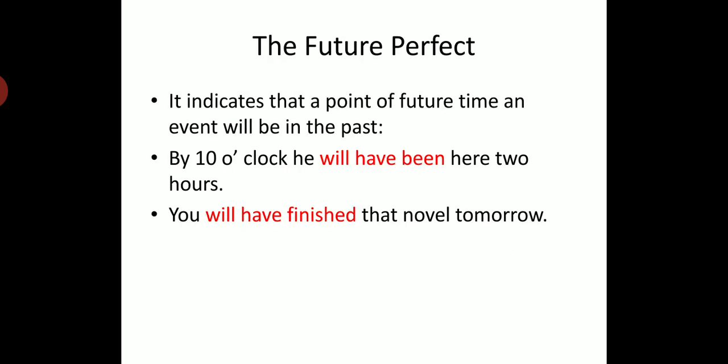Future perfect tense indicates that at a point of future time, an event will already be in the past. For example, 'By ten o'clock he will have been here two hours' means that by ten o'clock, two hours of his being here will have passed. Similarly, 'You will have finished that novel by tomorrow' means the reading will already be complete by that future point.